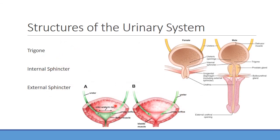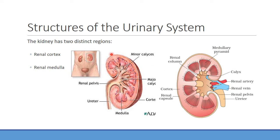The trigone is an area of mucosa where the ureter enters the bladder, running along the backside before leading out through the internal sphincter and then the external sphincter, where we have voluntary control. There are notable differences in urethral length between males and females, which can influence things like likelihood of infections — important to understand for your different gendered patients.